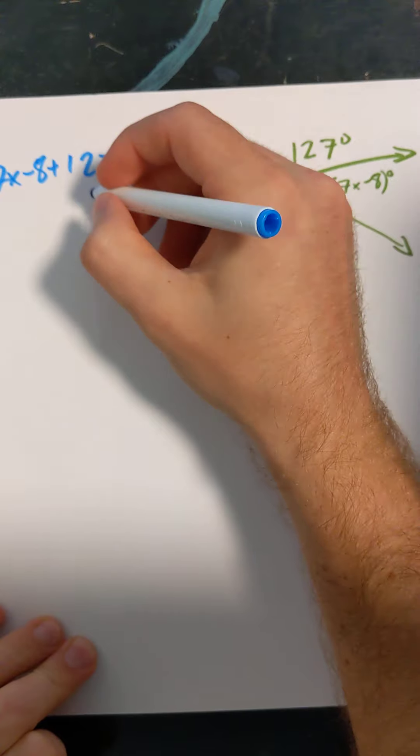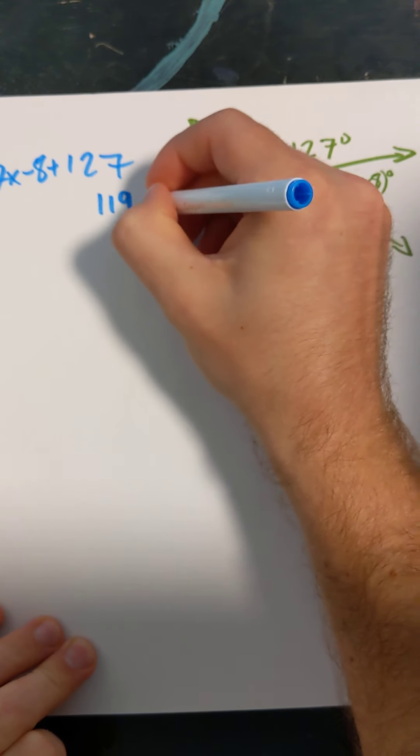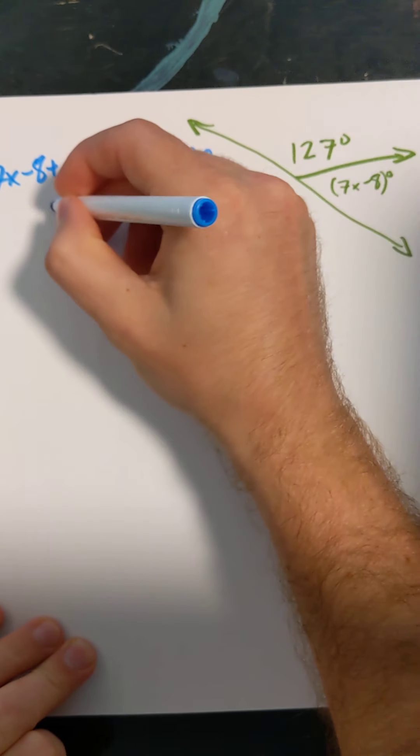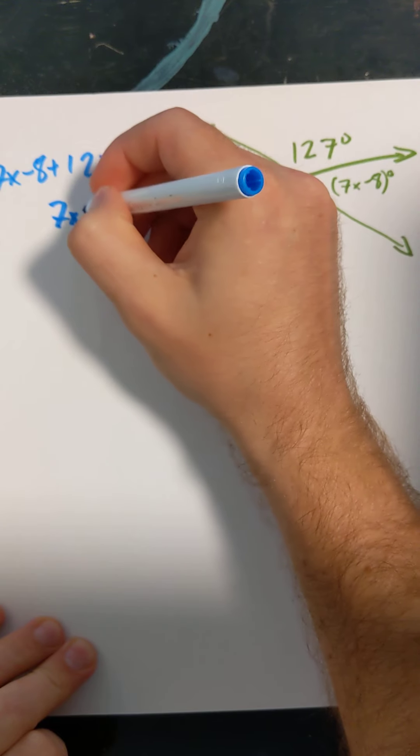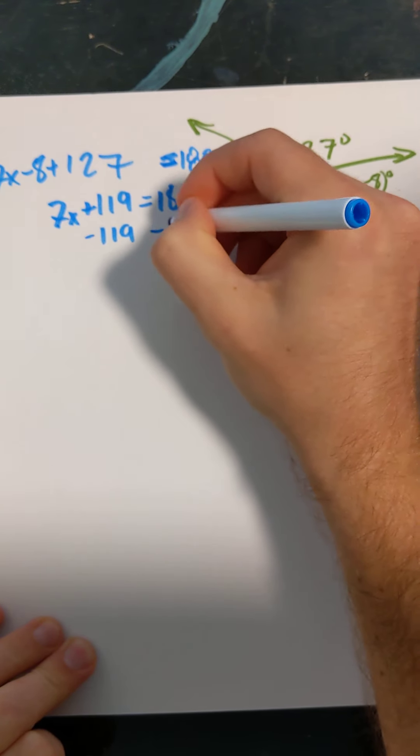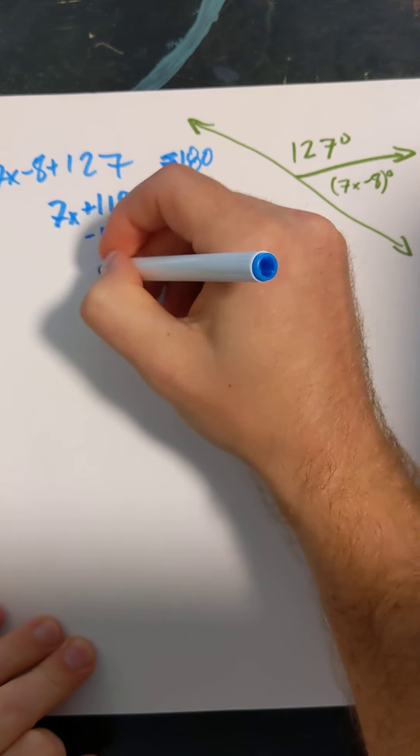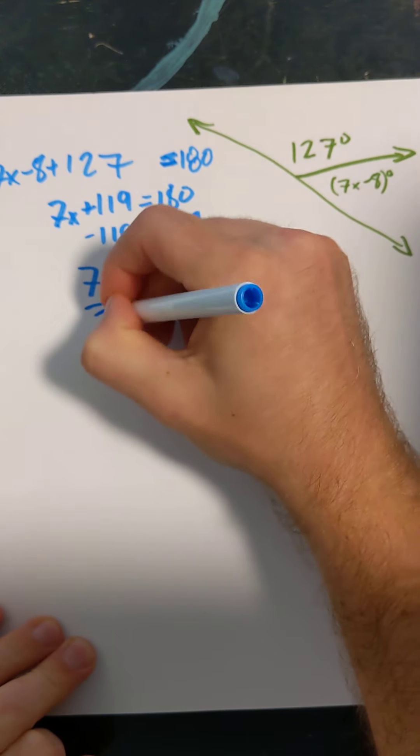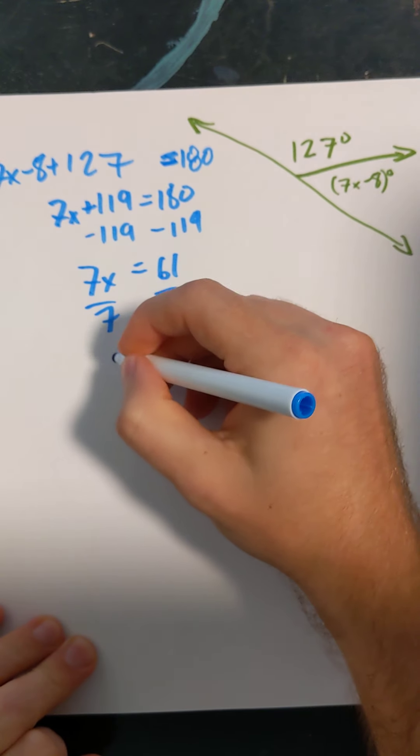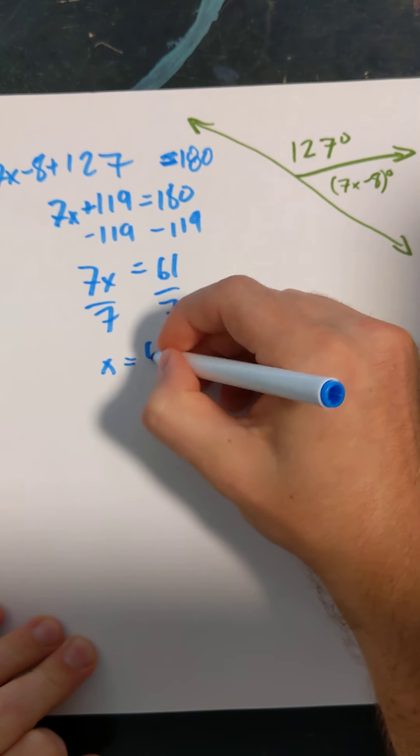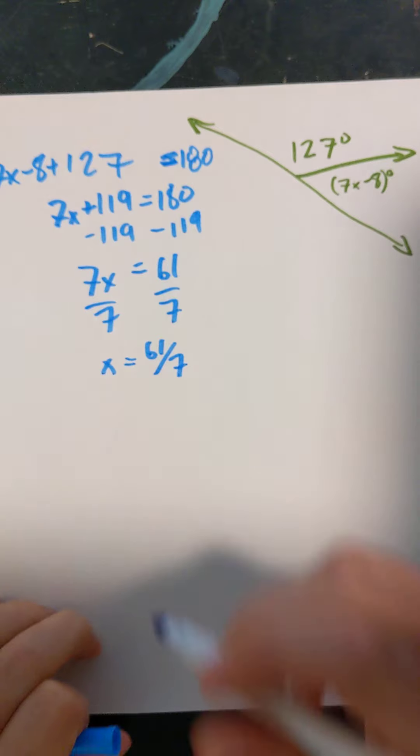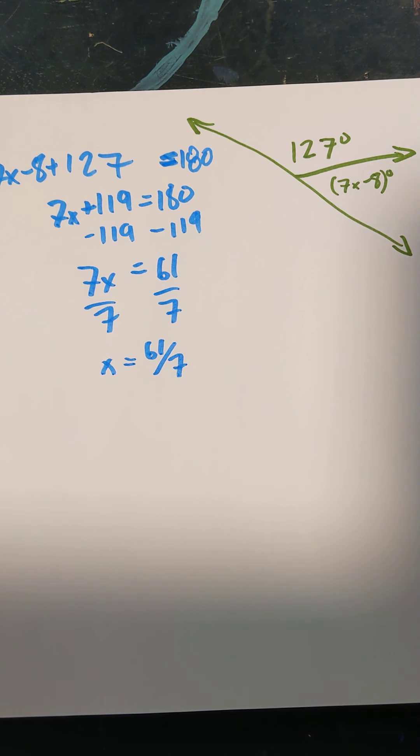Negative 8 plus 127 is 119, equals 180. Minus 119 from each side, and that gives us 61 equals 7X. Divide by 7 on each side, and X equals 61 sevenths. Sevenths doesn't terminate well, so I'm not going to convert that to a decimal.